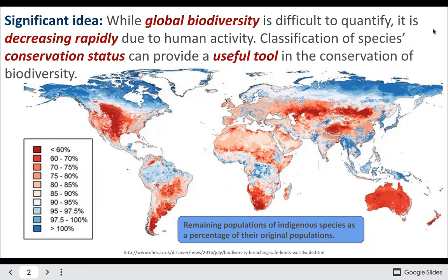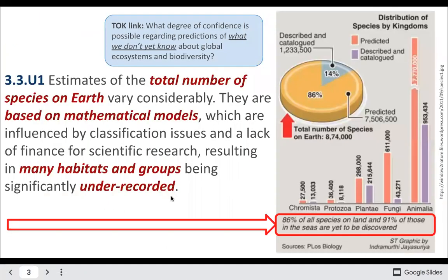Classifying the species conservation status is really helpful in conserving that biodiversity. We can see the percentage of remaining species — less than 60 percent of remaining populations. Estimates of the total population of species vary considerably, with lots of different estimates.